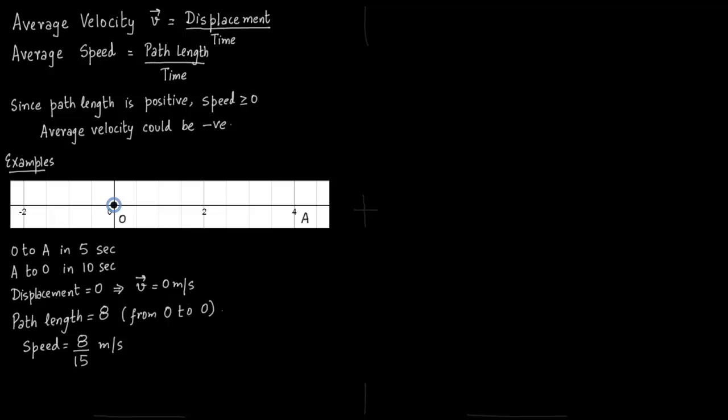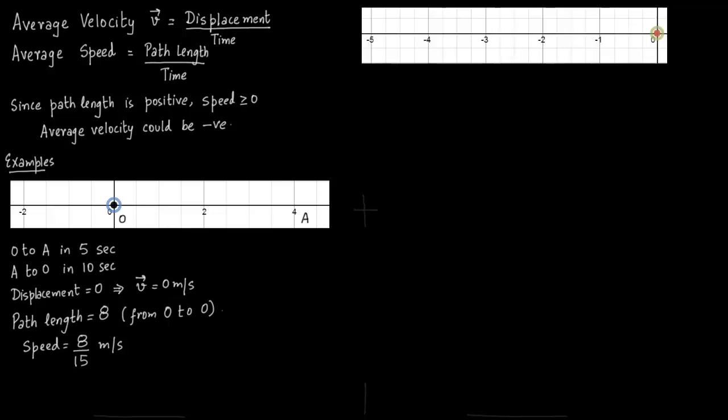So let us now come to another example. Here we will consider negative displacement. So say you go from 0 to minus 5 and then you stop finally at minus 3. So 0 is named O, minus 5 is A and the final resting point is B.